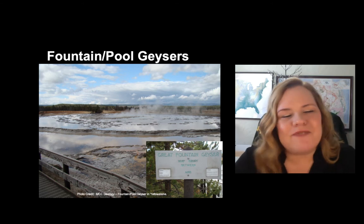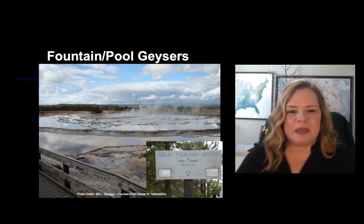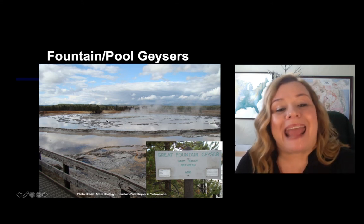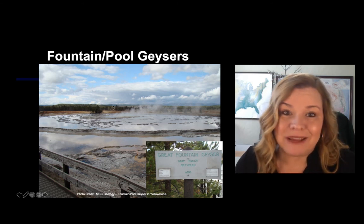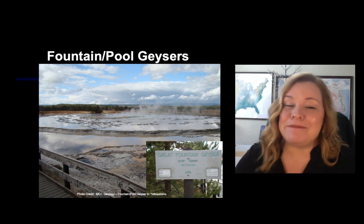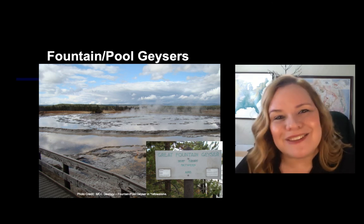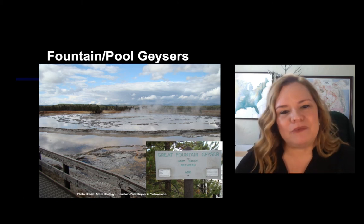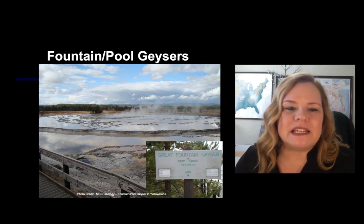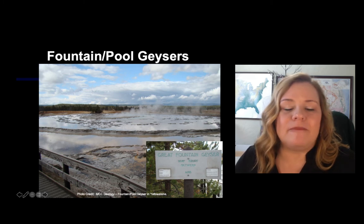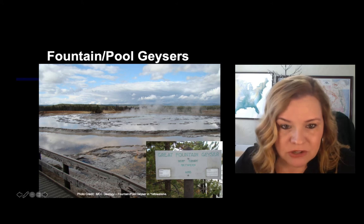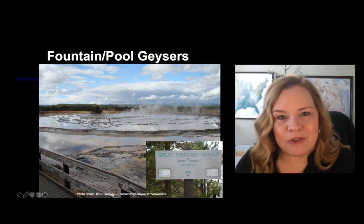This is Great Fountain Geyser in Yellowstone — a big wet area with no cone and no geyserite buildup at the surface, though you can see some deposits beginning to form. The geyser will erupt and spray, producing a large amount of water. There could also be some hot springs coming to the surface, but this is likely the origin where the fountain geyser will erupt.